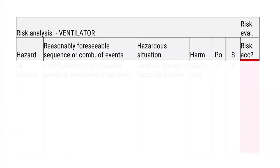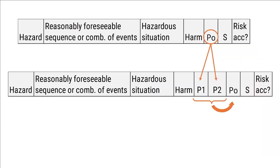Let's head over to documentation. How do you work with this in a Hazard Traceability Matrix, often referred to as an HTM? A typical HTM includes: hazard, reasonable foreseeable sequences or combination of events, hazard situation, harm, probability of occurrence (PO), severity, and the conclusion on whether the risk is acceptable. But when working with software, you should expand the matrix to also include P1 and P2. PO can then be based on the combination of P1 and P2.